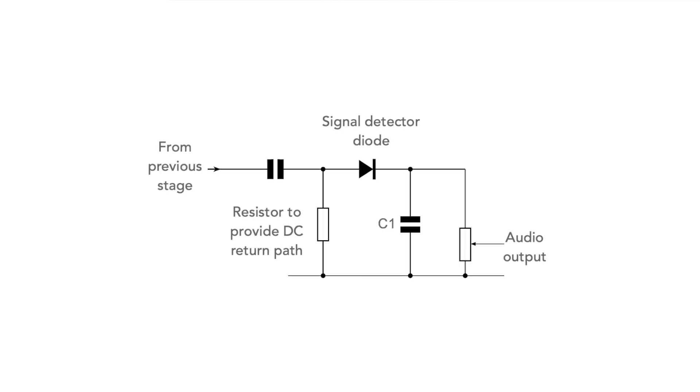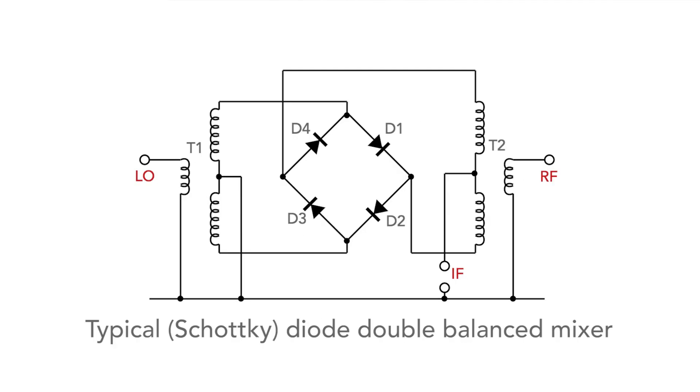They're also used in RF applications. Again, their low forward voltage drop is ideal, and their fast switching speeds mean that they can handle RF frequencies with ease. They're used in everything from signal detectors to mixers and a whole load of other areas.